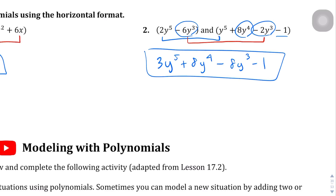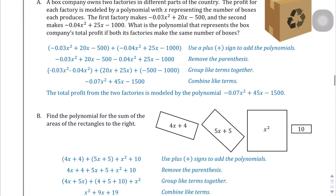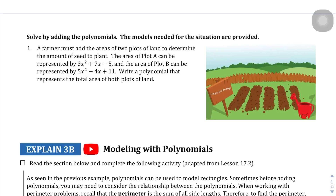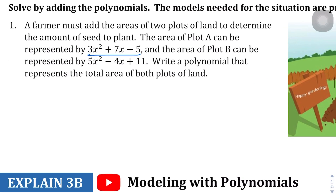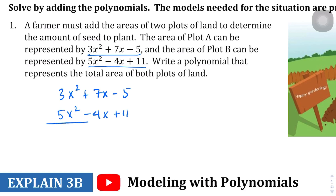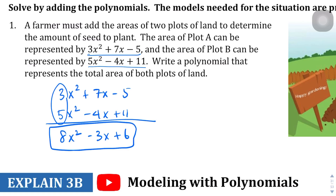Let's add one more page with context. A farmer must add the area of two plots of land to determine the amount of seed to plant. The area of plot A is represented by one expression and plot B by another. We'll line these up vertically — 3x squared plus 7x — they're already lined up pretty nicely. Adding the coefficients: we get 8x squared; 7 minus 4 is 3x; and negative 5 plus 11 gives 6. So the polynomial expression for the total area is 8x squared plus 3x plus 6.